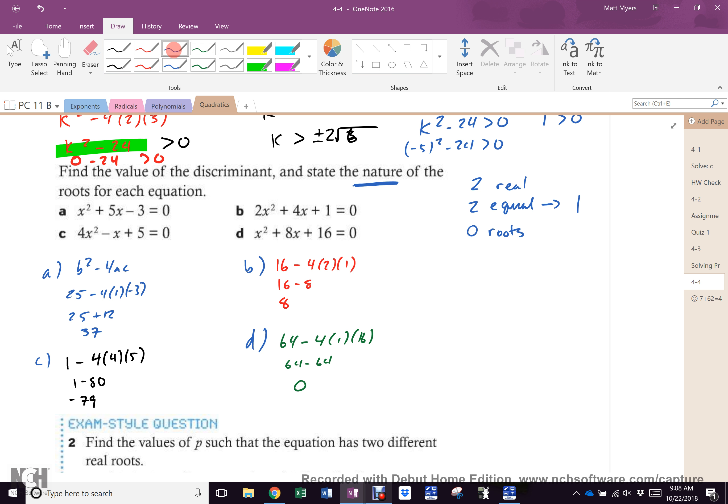How many roots for the blue one? Two. How many roots for the red one? Two. How many roots for the black one? None. How many roots for the green one? One. What's that really? Two equal real roots.